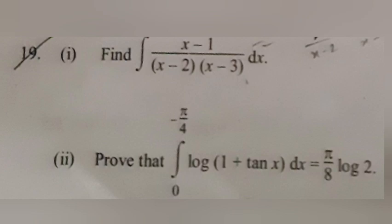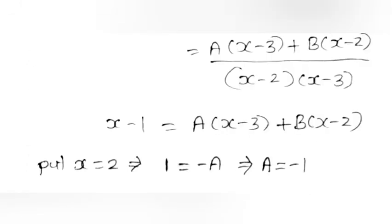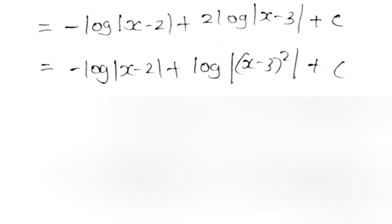Problem 19, Part 1. Find ∫(x−1)/[(x−2)(x−3)] dx. Using partial fractions: (x−1)/[(x−2)(x−3)] = A/(x−2) + B/(x−3). So x−1 = A(x−3) + B(x−2). Putting x = 2: 1 = −A, so A = −1. Putting x = 3: 2 = B. Therefore ∫ = −log|x−2| + 2log|x−3| + c = −log|x−2| + log(x−3)² + c.